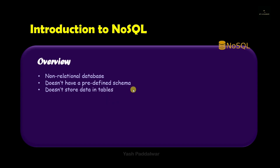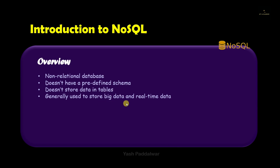NoSQL doesn't support tables because it stores big data as well as real-time data. As we have already discussed, big data doesn't include only structured format — it may include unstructured data of different types. For example, it can be image, audio, video, etc. So for storing that, we cannot use the traditional structured format. Instead, we can use NoSQL.